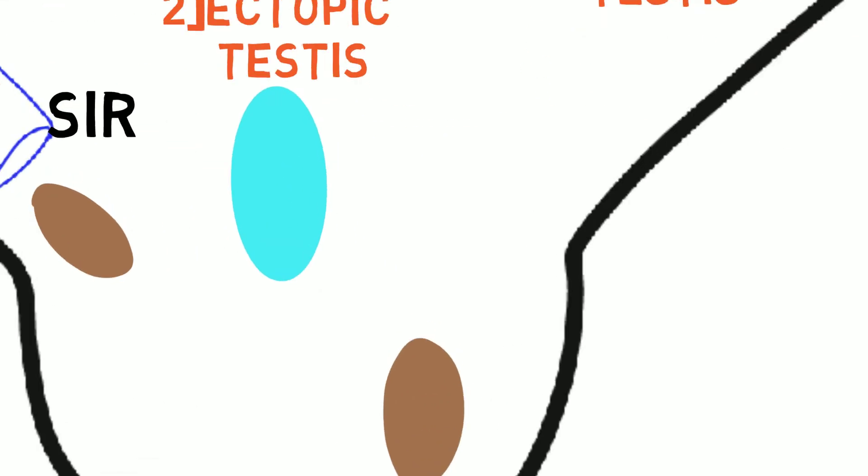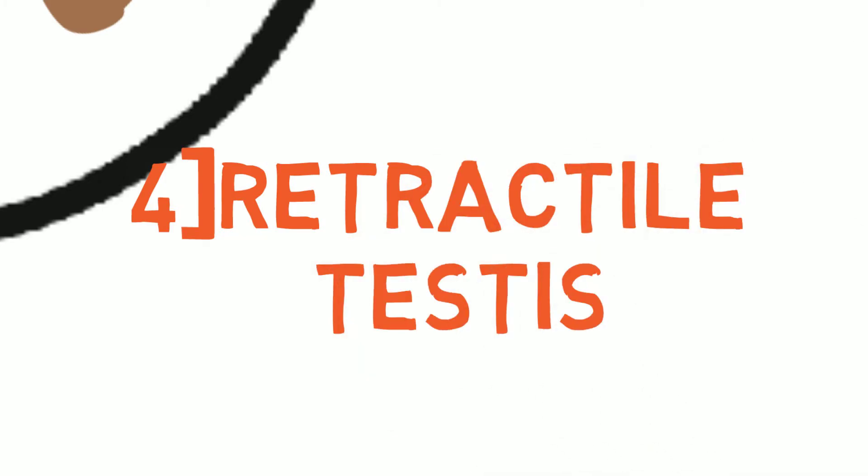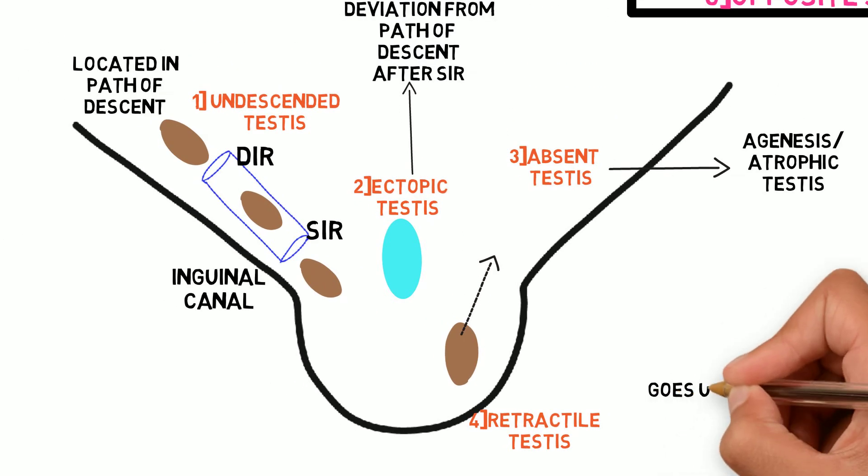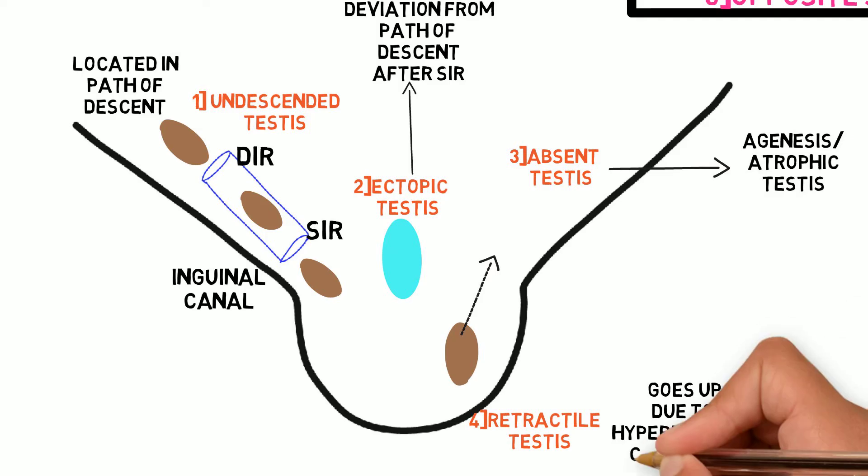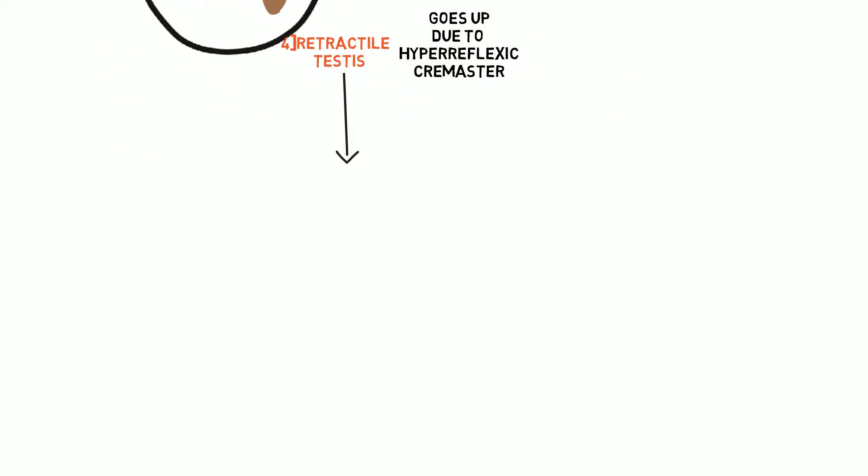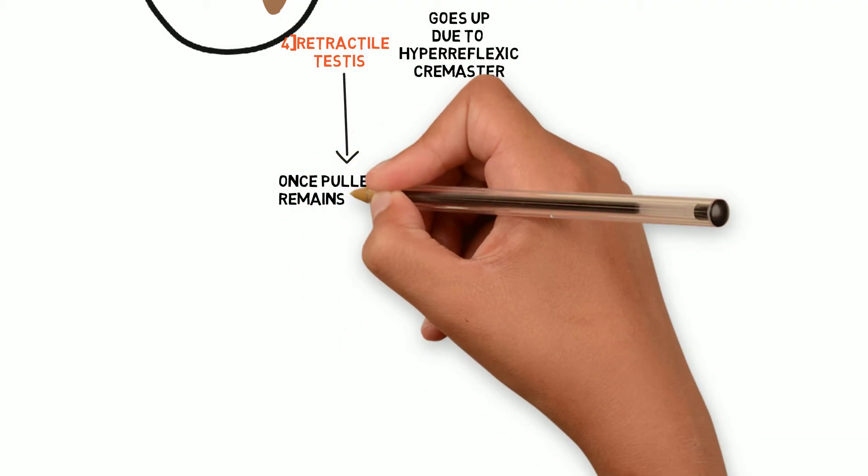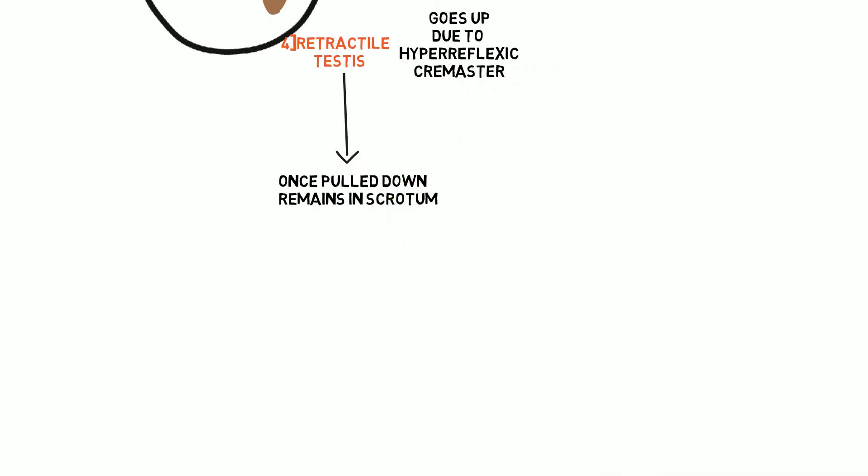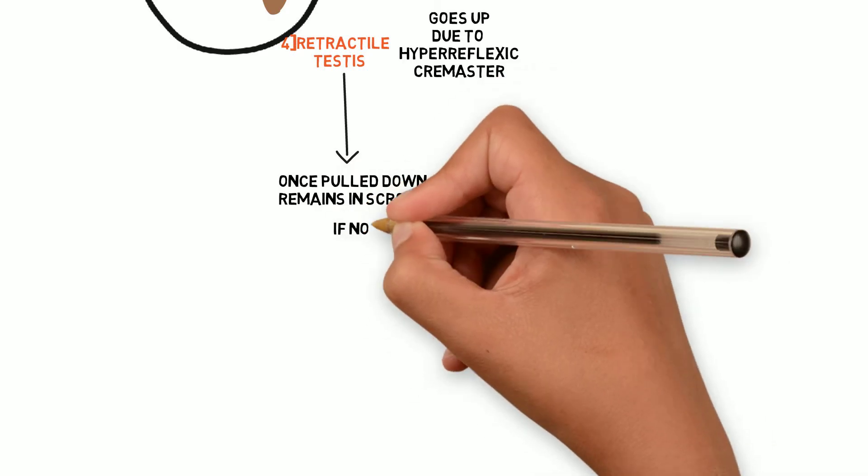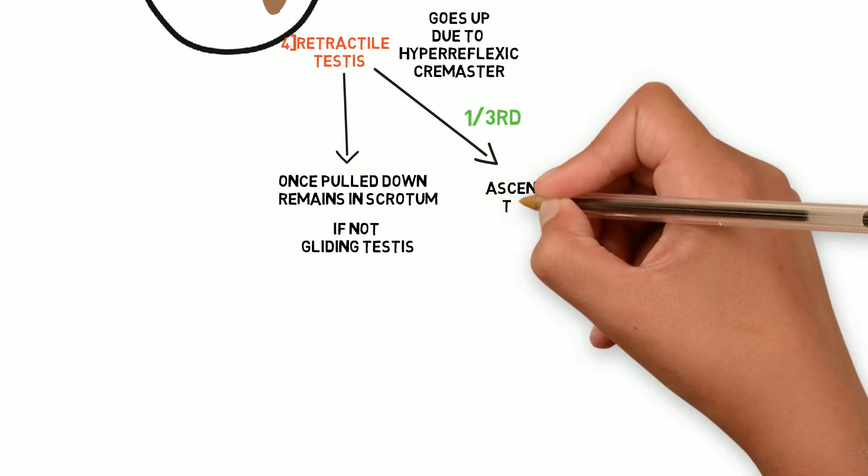Fourth is retractile testis. Here the testis is in the scrotum but goes up intermittently due to hyperreflexic cremaster. This is important for two reasons. When brought down, retractile testis should remain comfortably in the scrotum. If it goes up immediately, then gliding testis, which is a form of undescended testis, should be ruled out. Another reason is that one third of retractile testis can later become ascending testis.